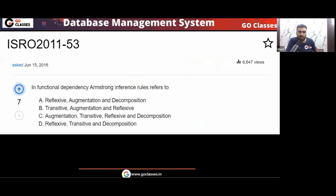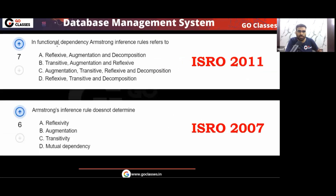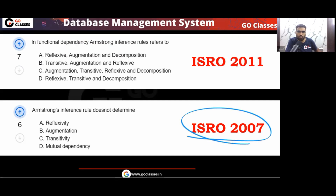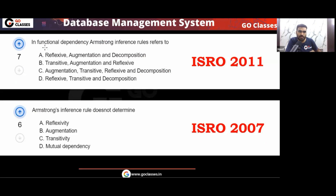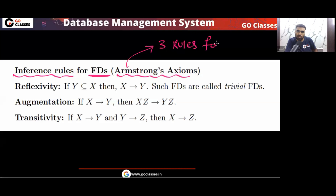Let's solve the ISRO 2011 question. A similar question also appeared in ISRO 2007. Both questions ask about Armstrong inference rules for functional dependencies. There are three Armstrong inference rules for FDs — we have already seen them. These are the basic rules, and from these we can derive many other rules.